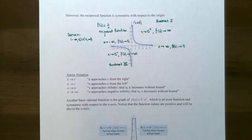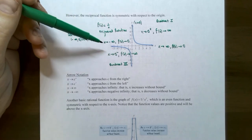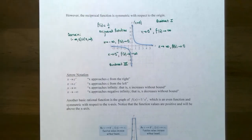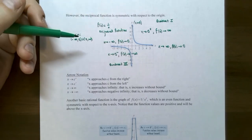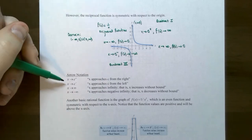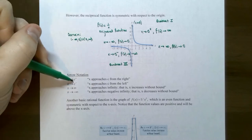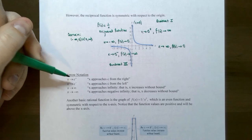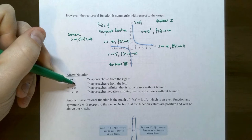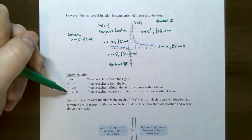We can generalize arrow notation: if there's an issue with substituting x = C into the function, we look at x → C⁺ (approaching from the right), x → C⁻ (approaching from the left), and also what happens as x → ∞ or x → −∞.